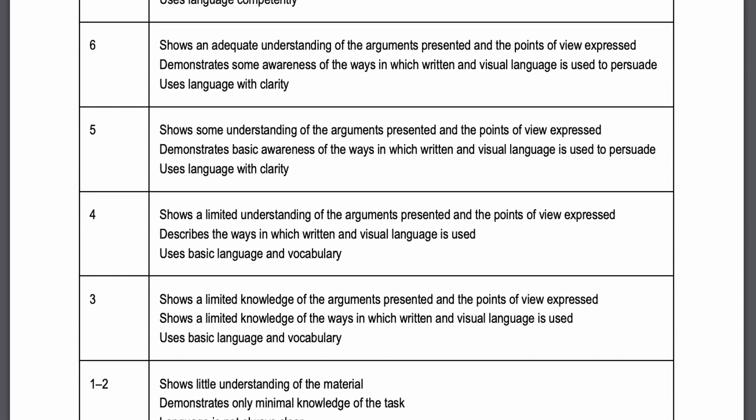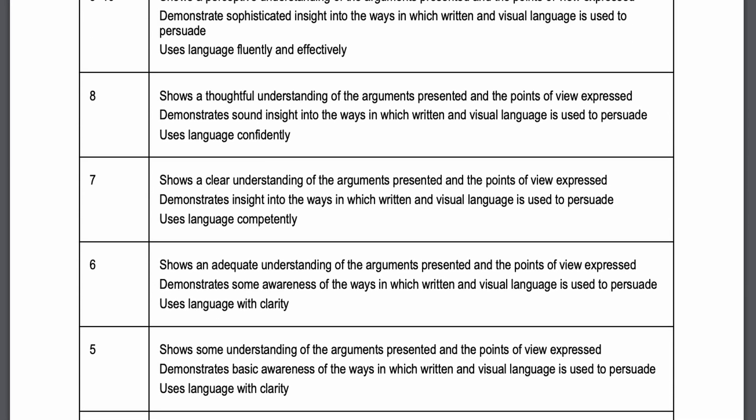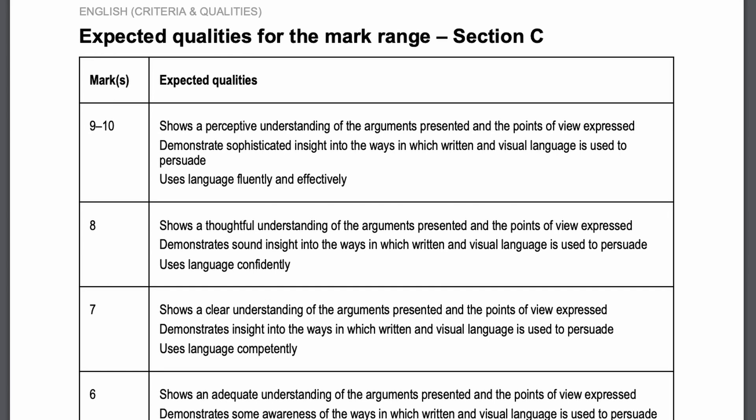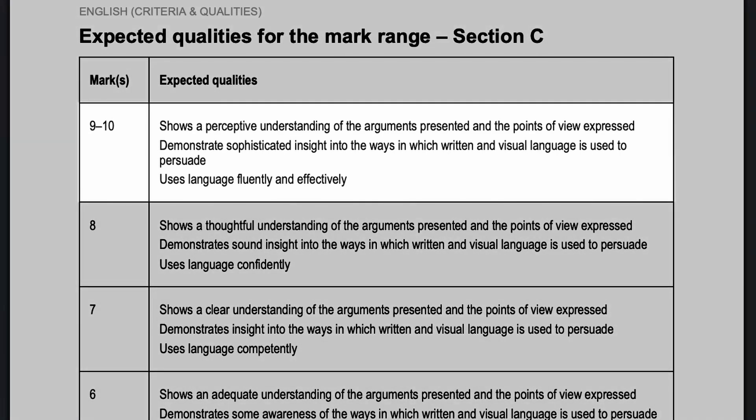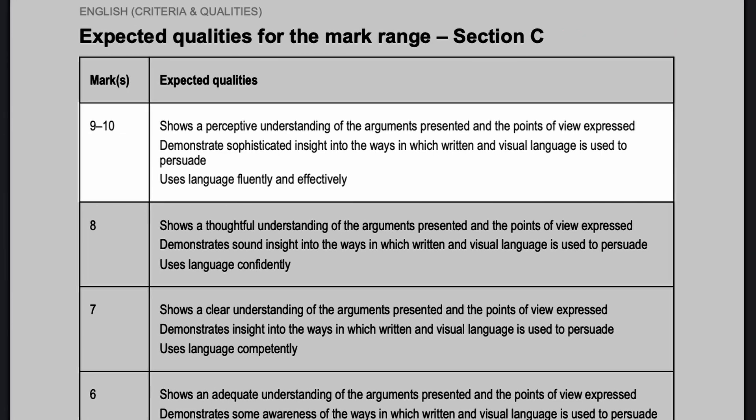If you look at the criteria for a 10 out of 10 English essay, you can see there are a couple of requirements, but the main one that applies to all essays is our ability to demonstrate a close understanding of the text. This can be quite broad — it could mean picking the right quotes or having a clear structure — but I want to focus on one thing consistently seen in high-scoring essays: using short and even single-word quotes.